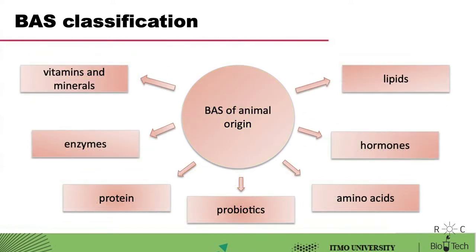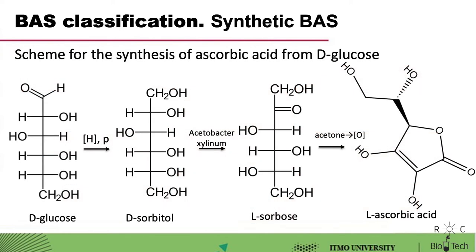Biologically active substances of animal origin are not so diverse. They are not so rich in vitamins and minerals, but certain types of vitamins can be found mainly only in animal products, for example, vitamin D and B12. Bioactive substances can also be synthesized. For example, alkaloids, which are highly active but also highly toxic. This led to the production of a number of synthetic drugs related to alkaloids which are less toxic. On an industrial scale, ascorbic acid, known as vitamin C, is also produced synthetically from D-glucose.